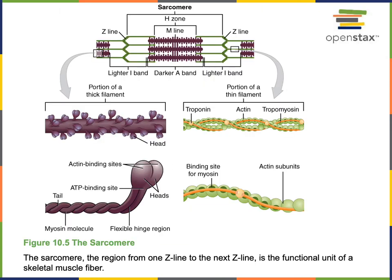Here we see the structure of the myofilaments in the sarcomere. The thick myofilaments are made of the motor protein myosin ATPase, whereas the thin myofilaments consist of actin as well as tropomyosin and the calcium sensor protein troponin. The actin proteins each have a binding site for myosin. However, tropomyosin is covering the binding site for myosin on actin in the thin filaments when the muscle fiber is at rest.